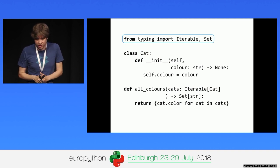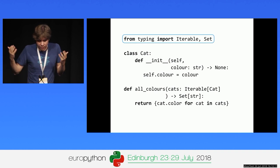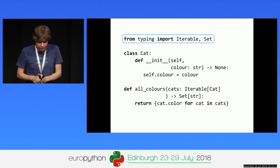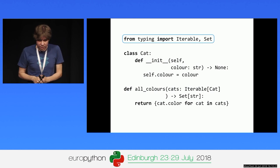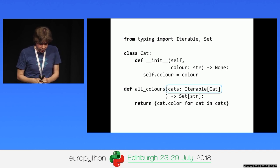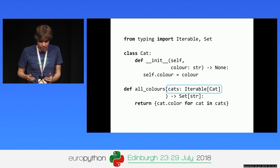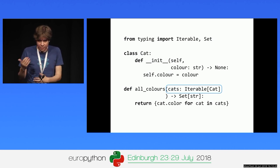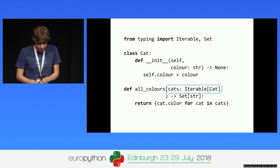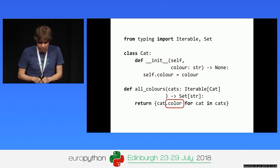The typing module is in the standard library, with a backport for Python 3.4 and Python 2.7. It provides types and utilities that almost all non-trivial annotated code will use. In this example, we import Iterable and Set and use them in the annotation for the function all_colors. The cats argument is an Iterable over Cat objects, and the return type is a Set of strings.